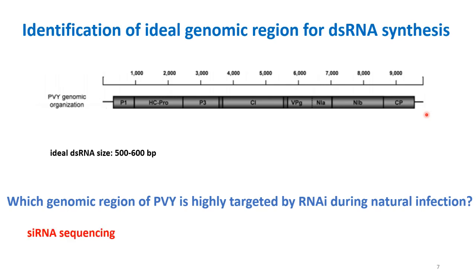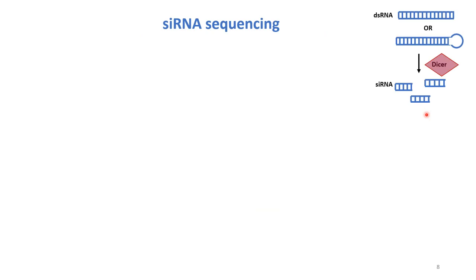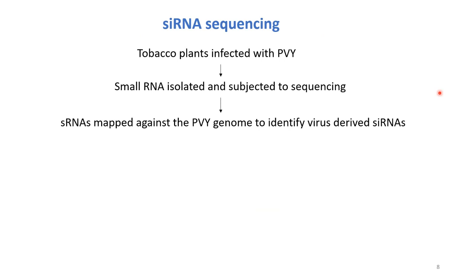We thought: why not identify the region which is highly targeted by RNAi during natural infection of tobacco by PVY? That region of PVY would be heavily targeted by the Dicer, and many siRNAs are generated — if I use that region as a template for dsRNA synthesis, it may provide efficacious control. One way to find out which region is heavily targeted is siRNA sequencing. When a virus attacks a cell, dsRNA or hairpin-like structures are formed, diced by the Dicer, and small siRNAs are formed. We sequence these siRNAs and map them against the genome to determine from which region they originated.